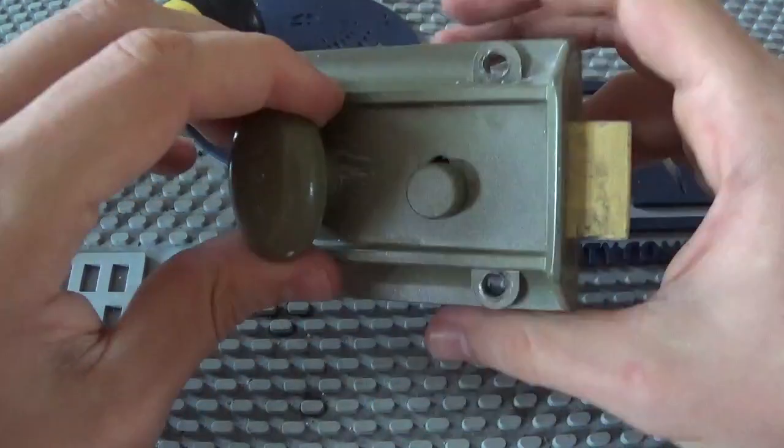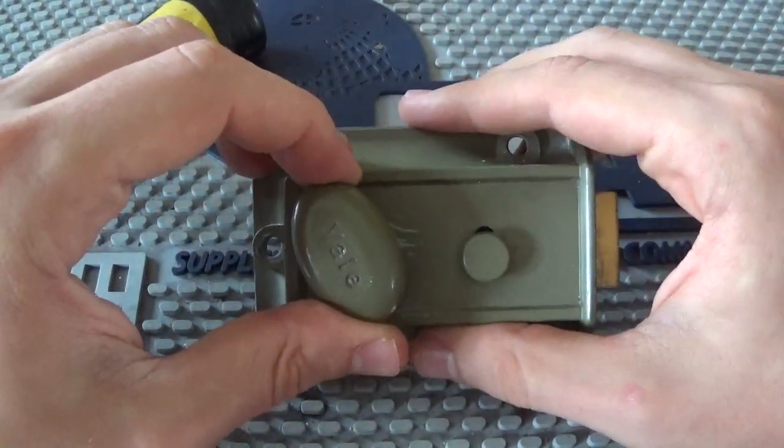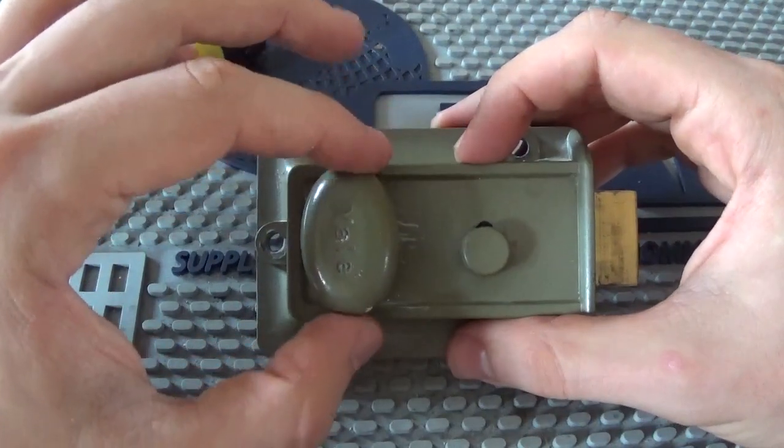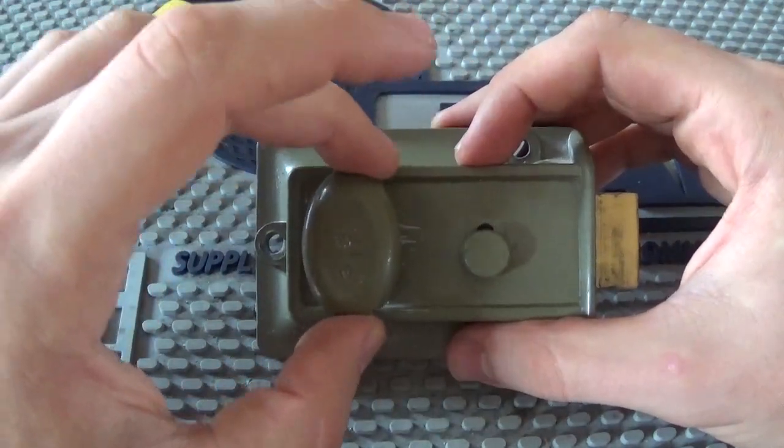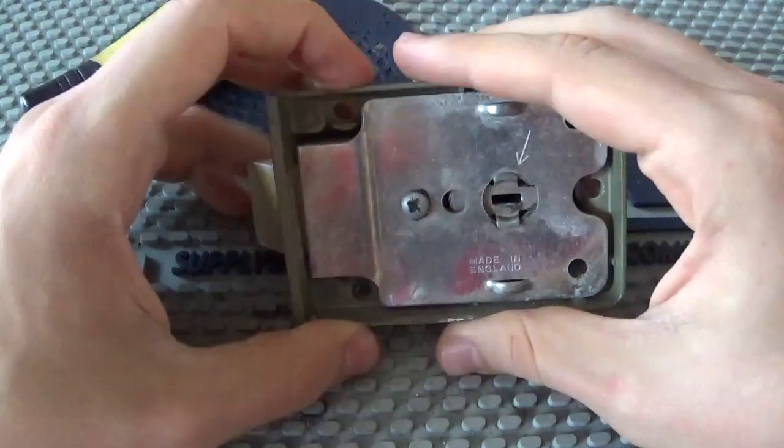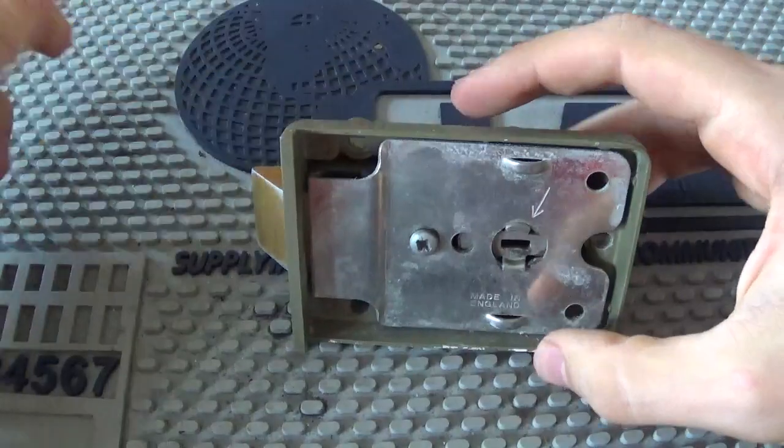Any problem with the dead locking function is you do not want to put it on if there's someone at home because it stops the person at home from being able to leave through the front door in an emergency. So you only use that if nobody's going to be at home.